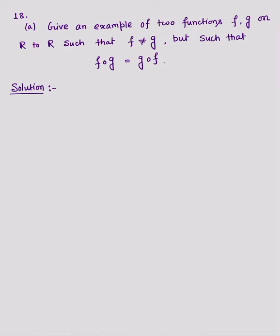So the question says, give an example of two functions f and g on R to R such that they are not equal, but when we compose like f composition g or g composition f, then they should be equal.